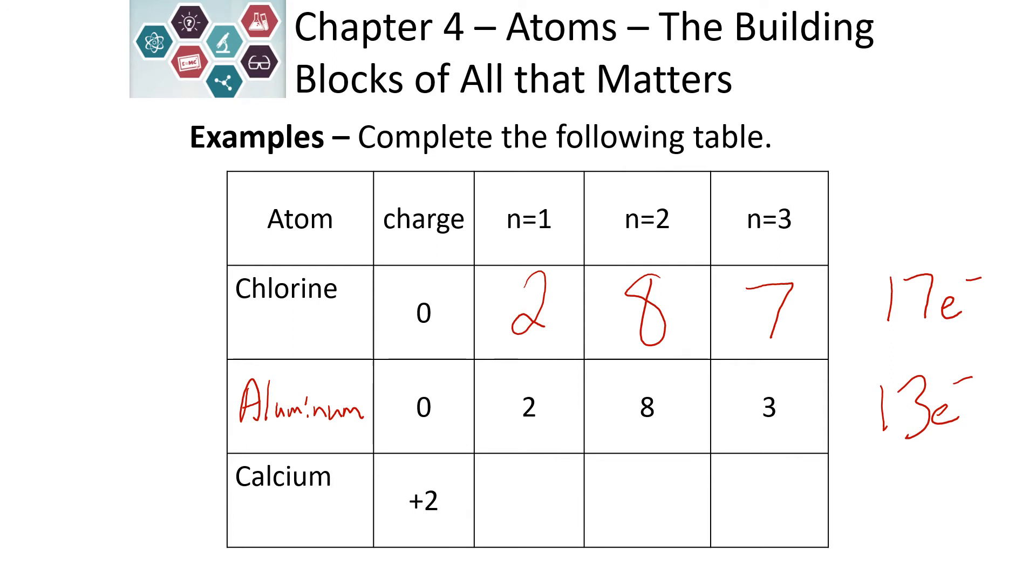Try to do calcium. See if you can put the electrons into the correct energy level. Well, calcium has 20 electrons, 20 protons. If it has a plus two charge, that means we have two less electrons. So we have 18 electrons to put into our orbitals. It's always two in the first energy level. There is eight in the second energy level, a maximum that we can put in. And in the third energy level, there would be eight to give us a total of 18 electrons.